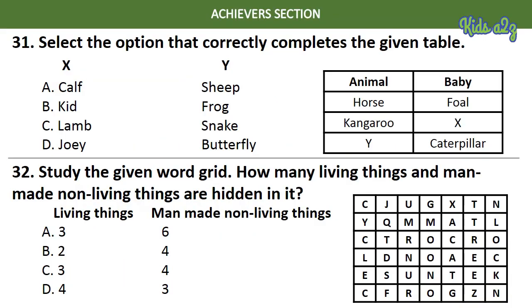Now, questions from the Achievers Section. Question 31: Select the option that correctly completes the given table. The answer is Option D — that is, joy and butterfly. Question 32: Study the given word grid. How many living things and man-made non-living things are hidden in it? The answer is Option C — three living things and four man-made non-living things.